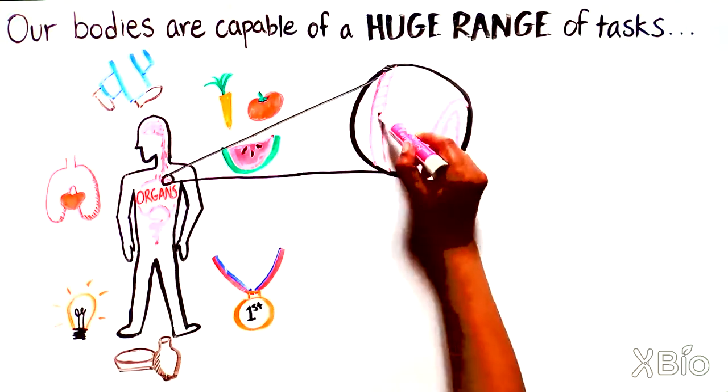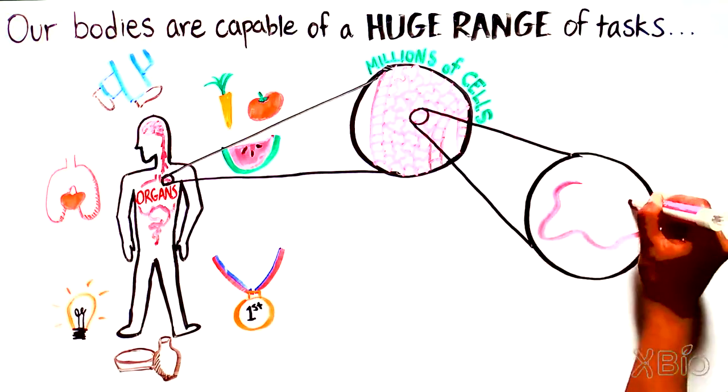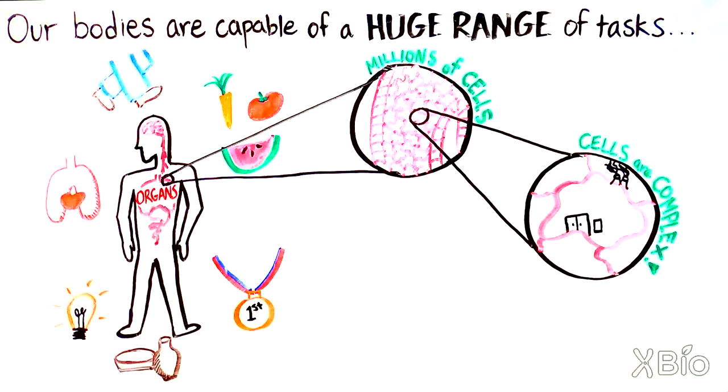Looking closer, we see that each organ is made up of millions of individual cells working together. Looking closer still, we see that cells themselves are quite complex. Every cell is essentially a tiny factory.